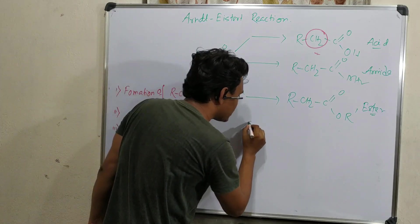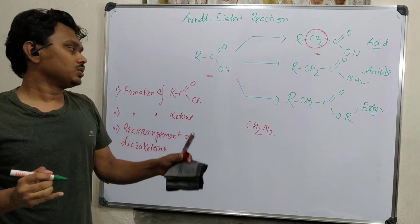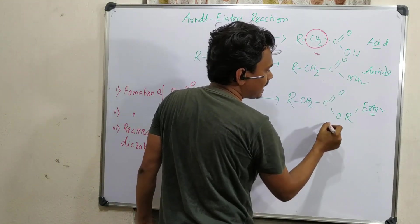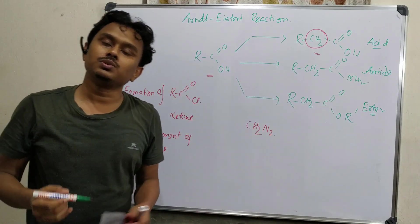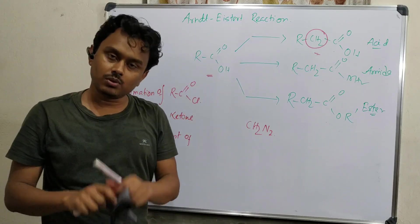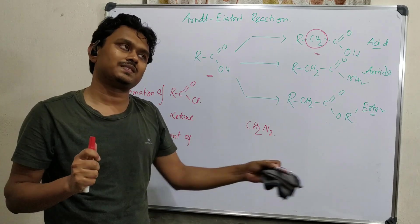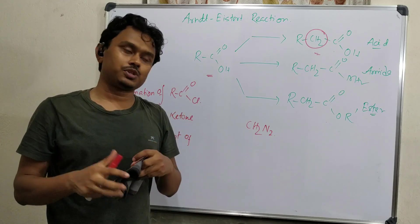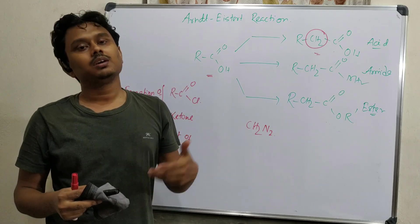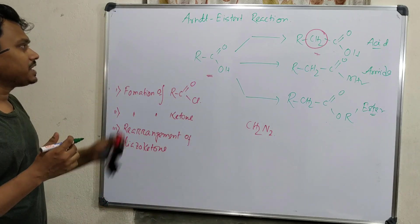In this reaction, the main reagent is diazomethane CH2N2. This reaction produces carboxylic acid, amide, and ester using three different solvents or reagents, but the process goes through the same intermediate. I'll discuss this reaction and give the key points. This will be a summary video. If you feel that details are missing, please mention it in the comment box and I will make a detailed video on that.